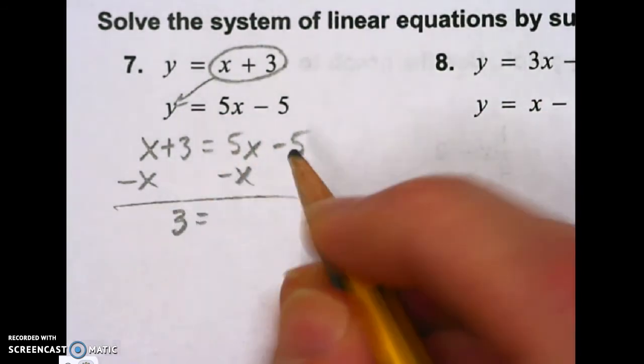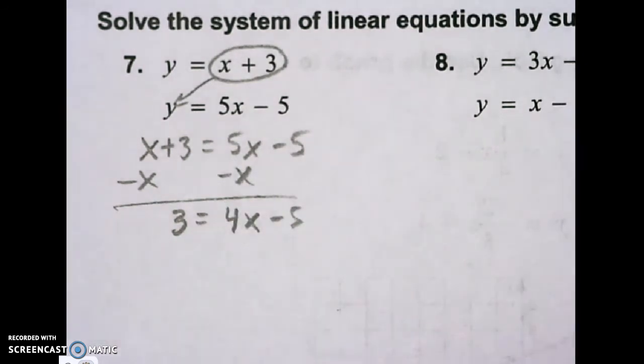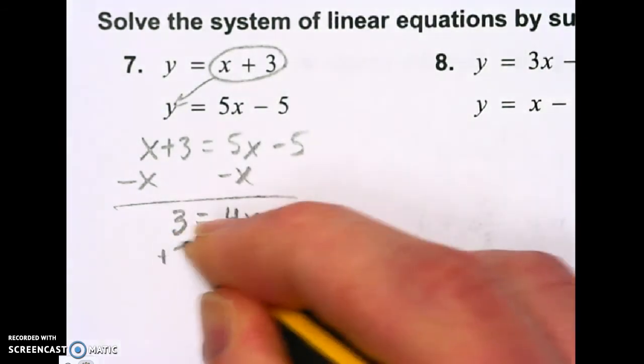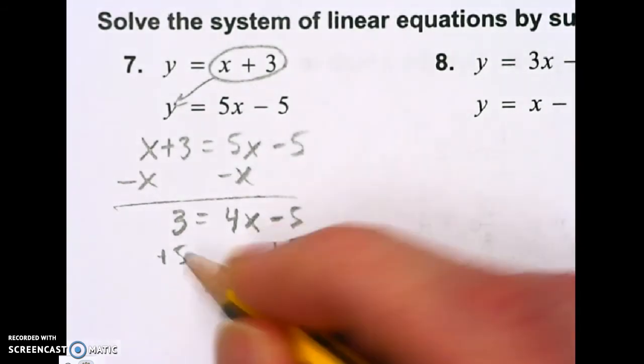Now I'll have 3 equals 4x minus 5. Add 5 to both sides. 4x equals 8.